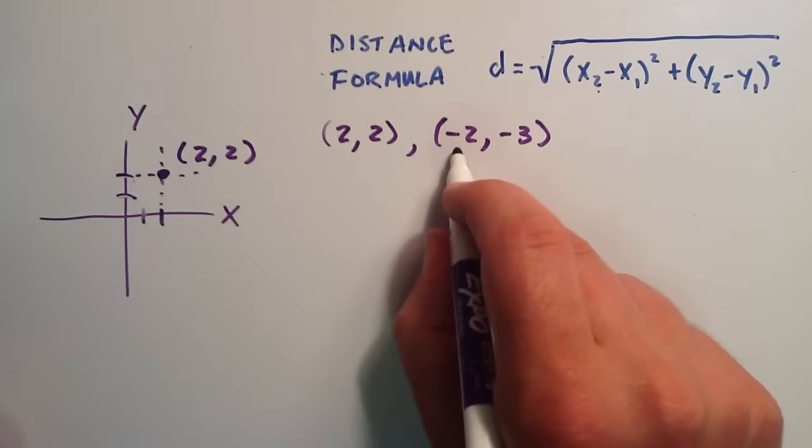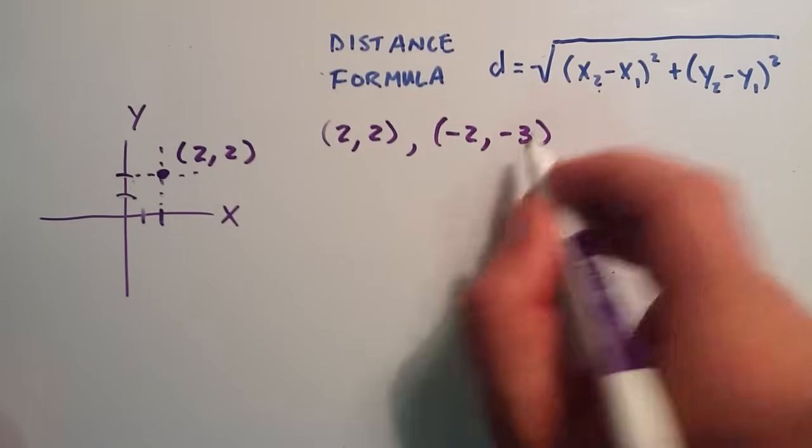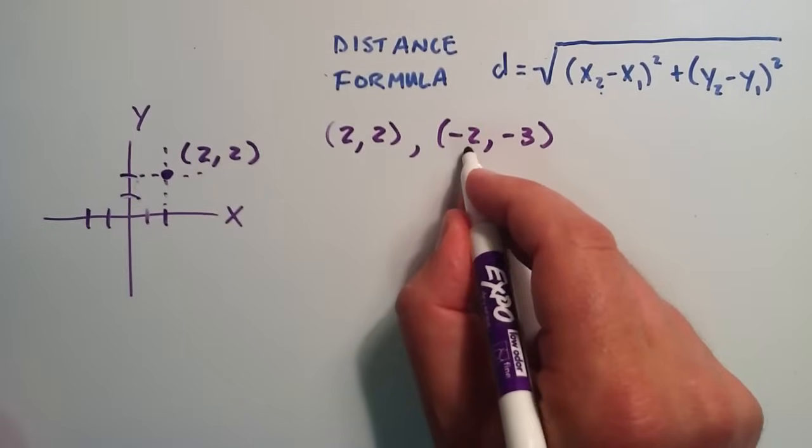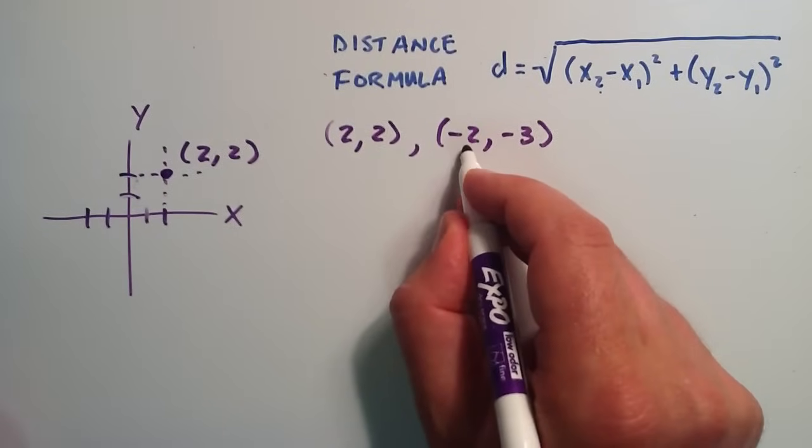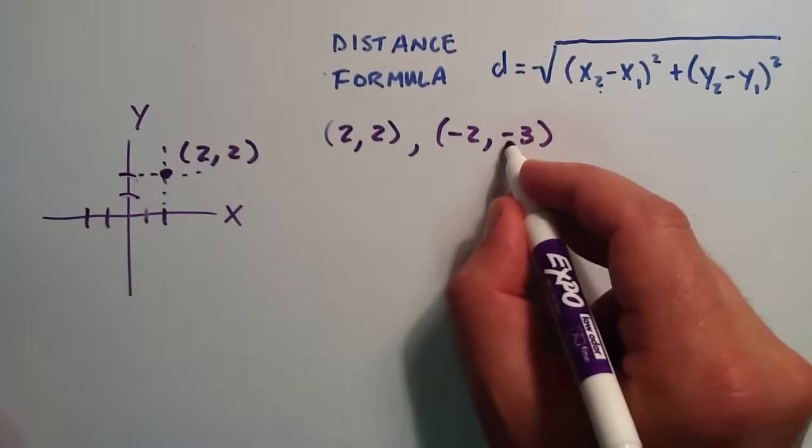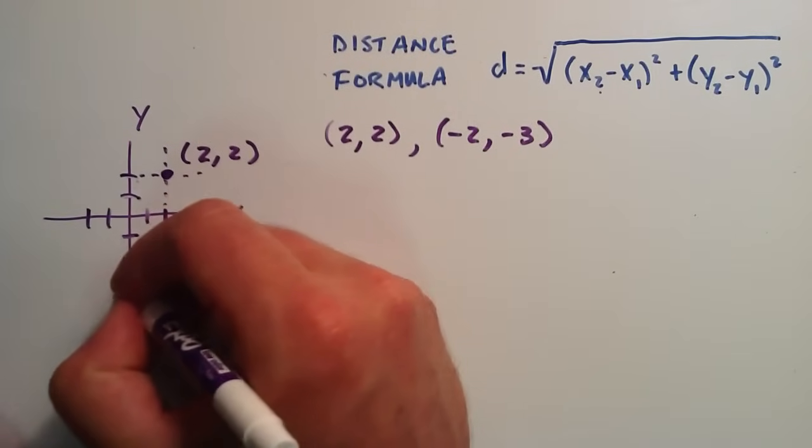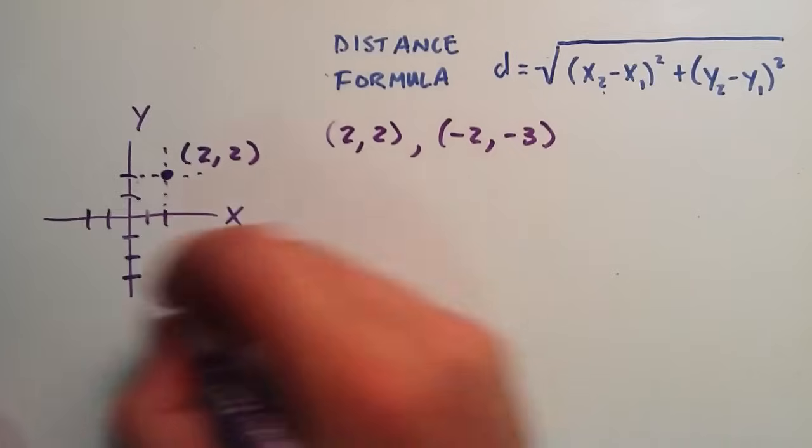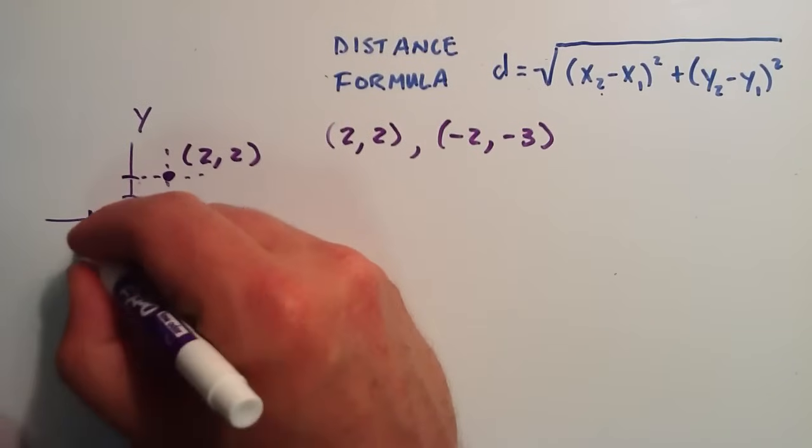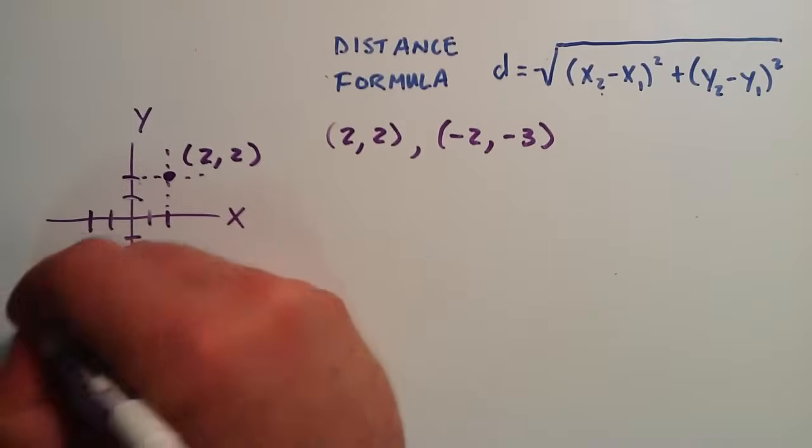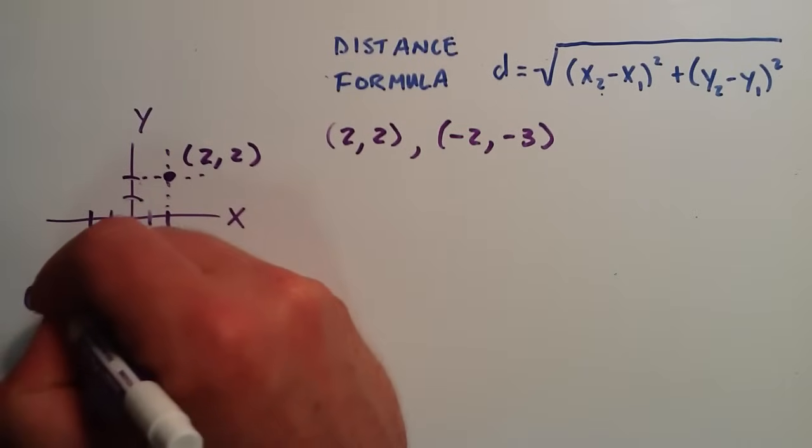And for our second point, (-2,-3), we go to negative 2 in the x direction and negative 3 in the y direction. And where these two dotted lines cross, we have the point negative 2, negative 3.